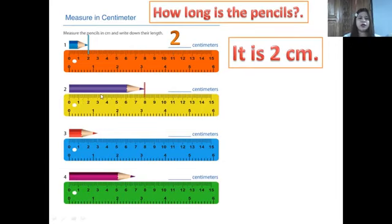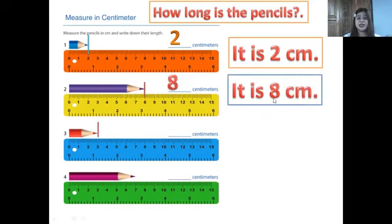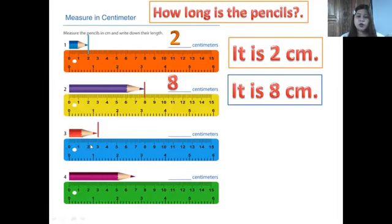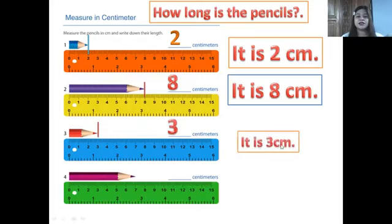Answer number two: how long is the pencil? One, two, three, four, five, six, seven, eight — how long is the pencil? It is eight centimeters. One more — look at the third ruler and the pencil. How long is the pencil? One, two, three — it is three centimeters.